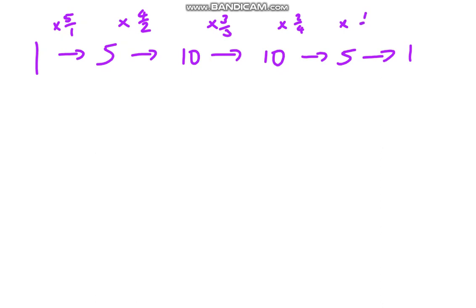To get from 10 to 5, multiply by 2 over 4. To get from 5 to 1, we're gonna multiply by 1 over 5. We can notice that the numerator is reducing by one each time and the denominator is increasing by one each time, which is fascinating, isn't it?